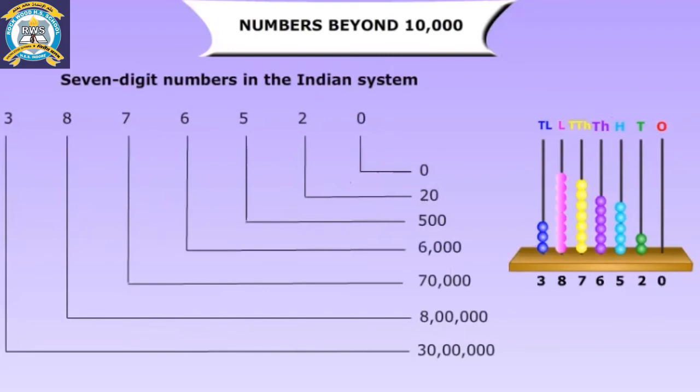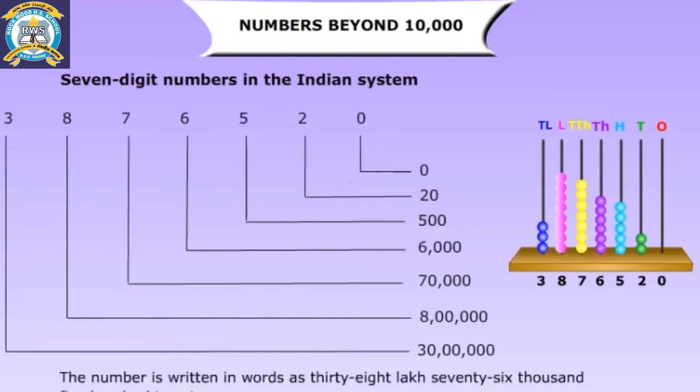The number is written in words as thirty-eight lakh, seventy-six thousand, five hundred twenty. In the Indian system, the period is marked by a comma as shown.